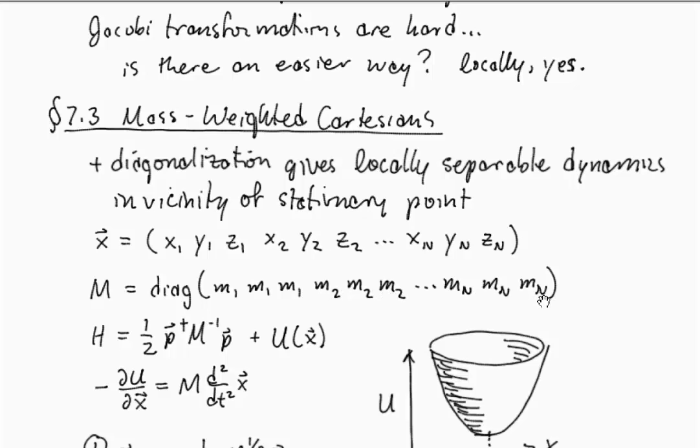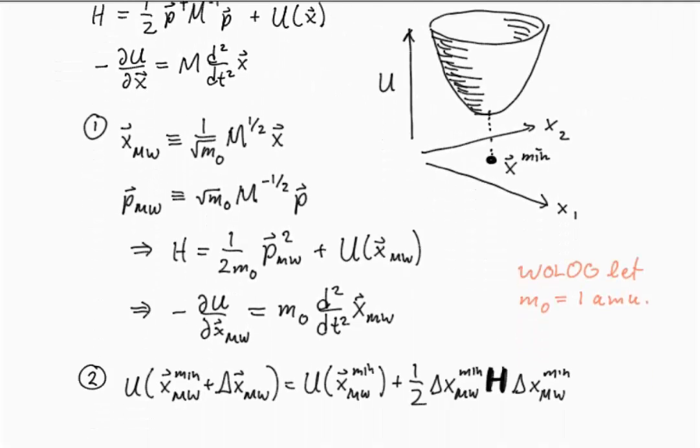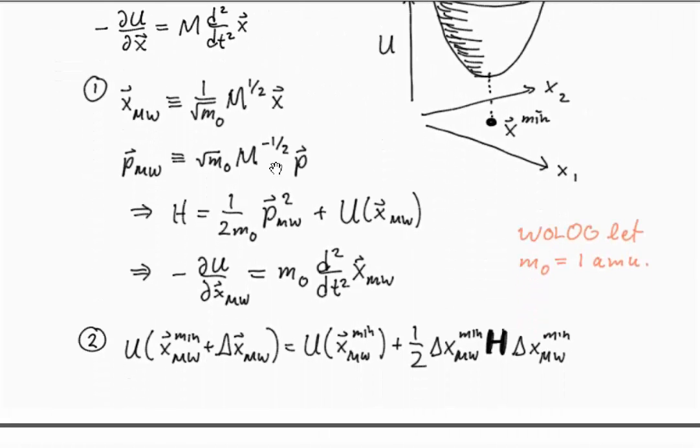And then we can write down our Hamiltonian, p squared over 2m, plus the potential energy, and then that gives rise to the familiar F equals mA. Now what I want to do is to imagine that we're going to introduce a coordinate transformation first.